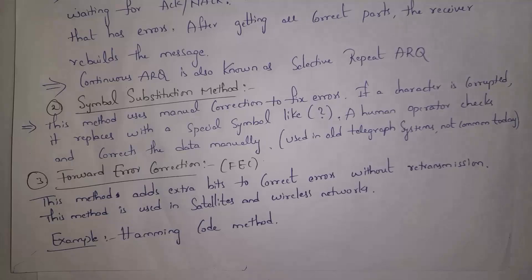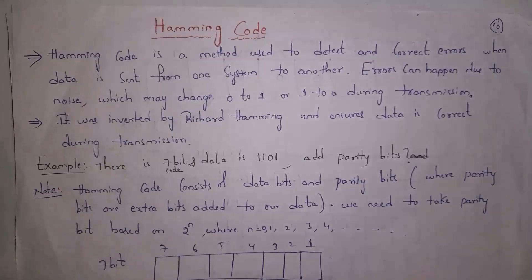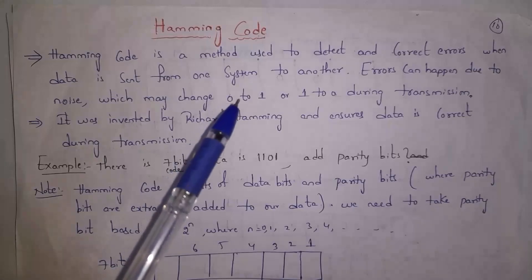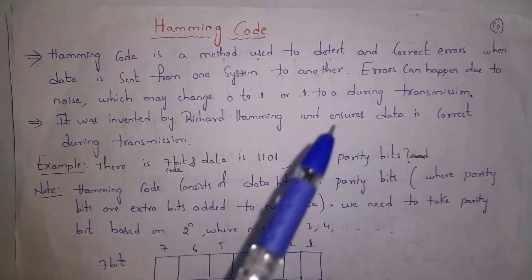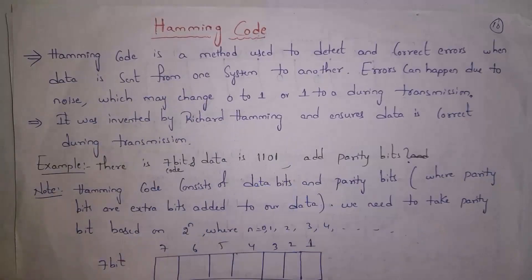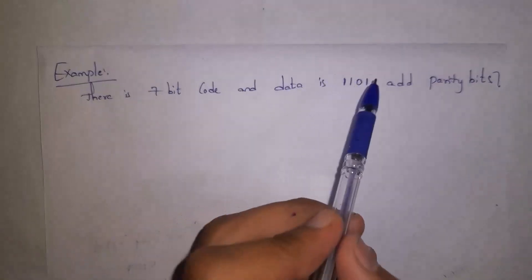One of the famous forward error correction methods is the Hamming Code method. Whenever one computer sends data to another, this Hamming Code method is used to detect and correct errors. Errors can happen due to noise — when a bit '0' changes to '1' or '1' changes to '0'. This method was invented by Richard Hamming. Example problem: there is a 7-bit code and data is 1 1 0 1 — add parity bits.